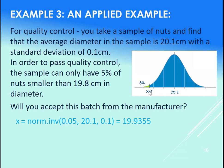When you're looking for an x, use your norm.inv. So put in that 5%, that's the area to the left of our x value. We want the x value itself, put in the 20.1 for the mean, the 0.1 for the standard deviation. Notice we do not put a comma 1 for norm.inv. That gives us 19.9355.